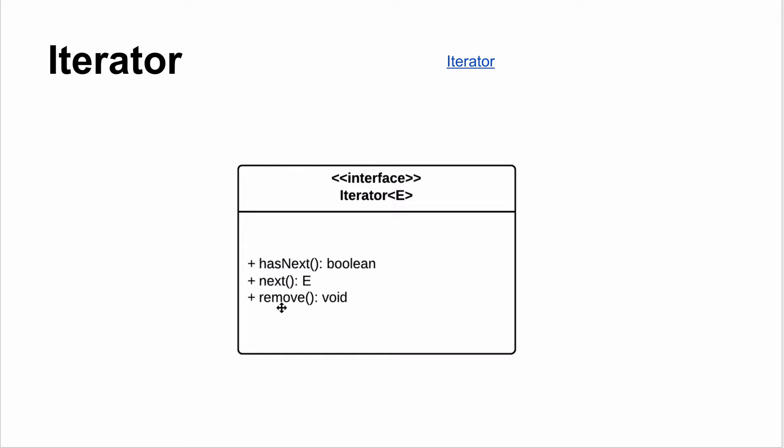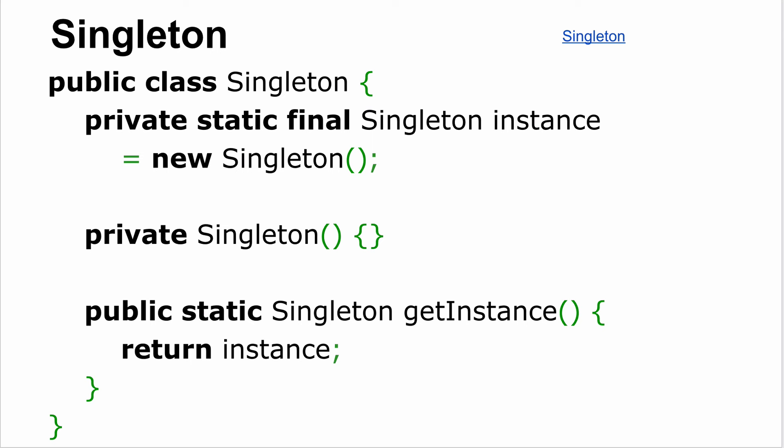The Singleton pattern comes up all the time. When you need exactly one instance of a particular class in your application, that's the Singleton. A Singleton class is one that only has one instance of it.